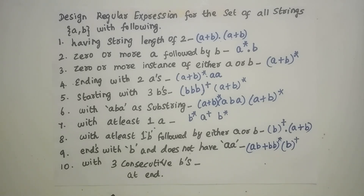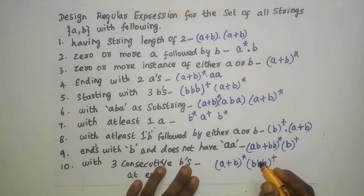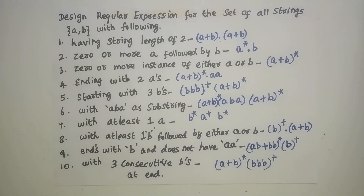The set of all strings over {A, B} with 3 consecutive B's at the end, which can be 1 or more occurrences. Before, you can have (A + B)* with 0 or more occurrences. Whenever you design a regular expression: if you have 'either', use union; if you have 'followed by', use concatenation; if you have '0 or more', use star closure; if you have '1 or more', use positive closure. First design for the minimum condition, then extend to all possible strings.